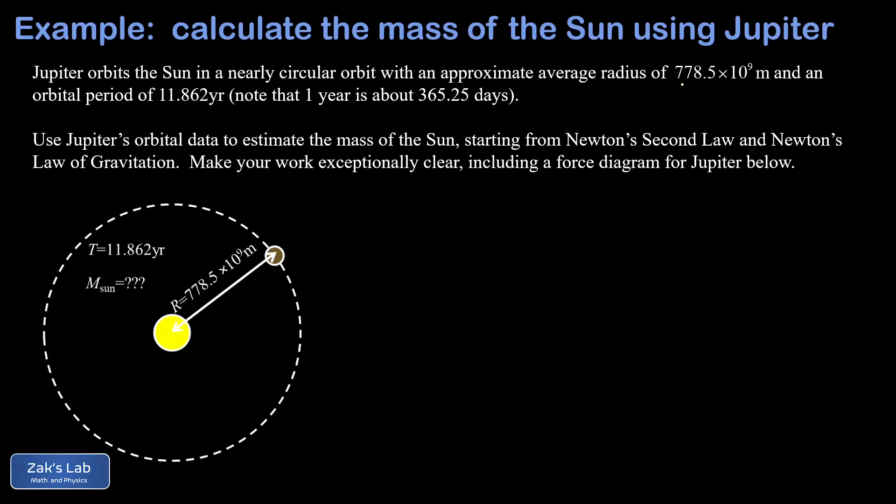I've actually cheated a little bit here and said the average radius of the approximately circular orbit is 778.5 times 10 to the ninth meters. That's actually the semi-major axis of the elliptical orbit, and I did that to make the mass of the Sun come out really close to the correct value. We're given that orbital radius and the orbital period for Jupiter of 11.862 years, and the year is about 365.25 days.